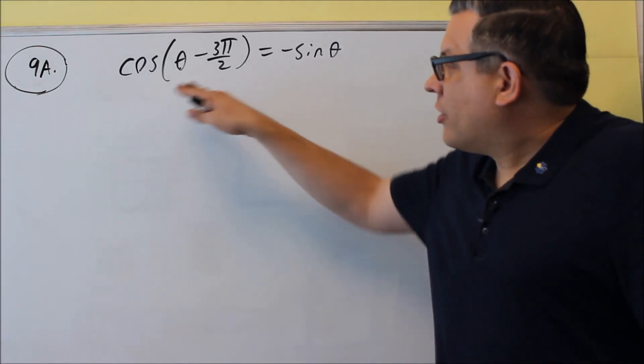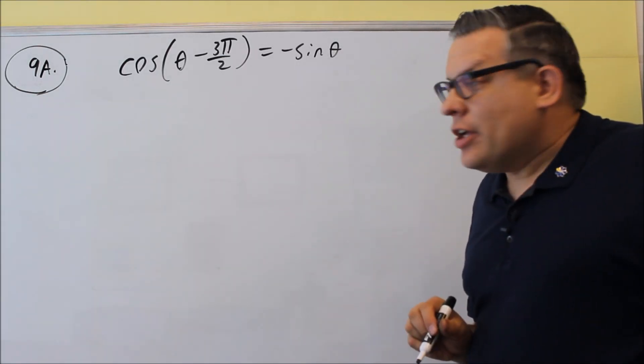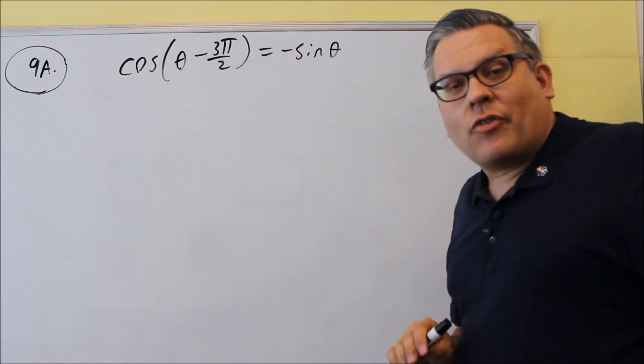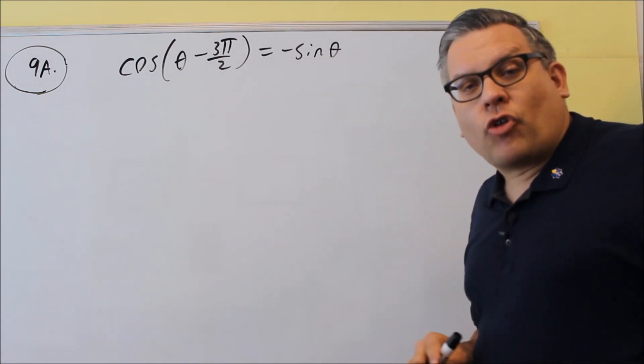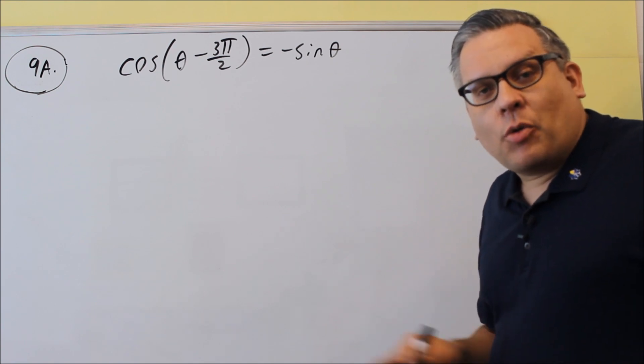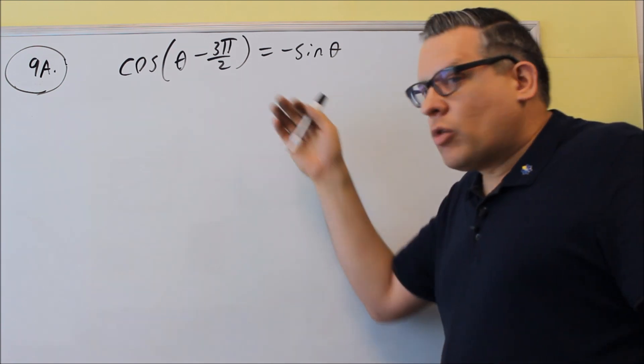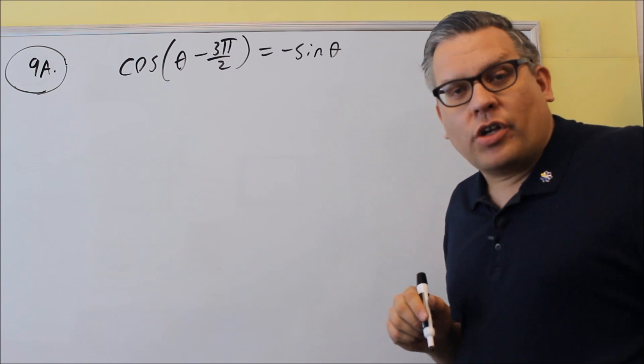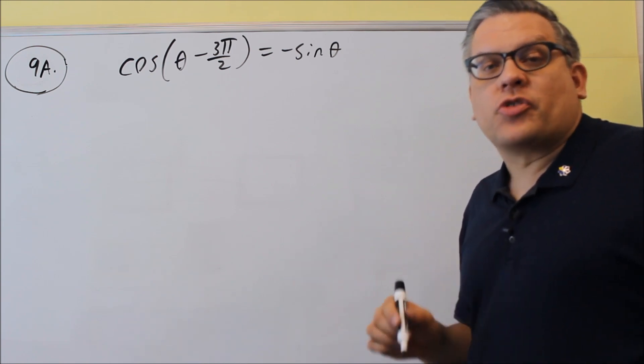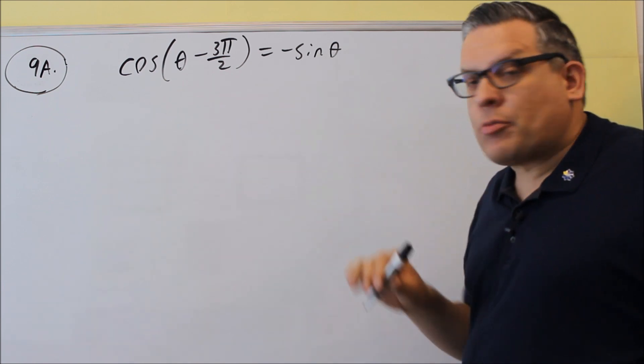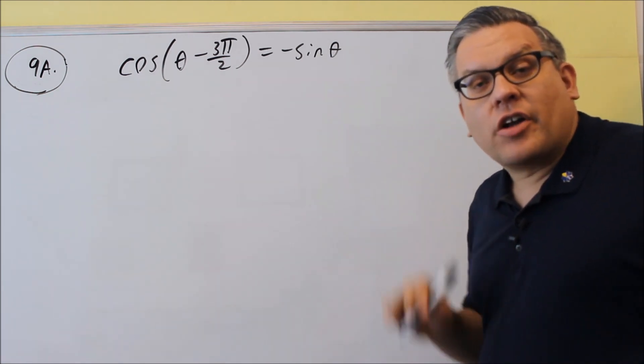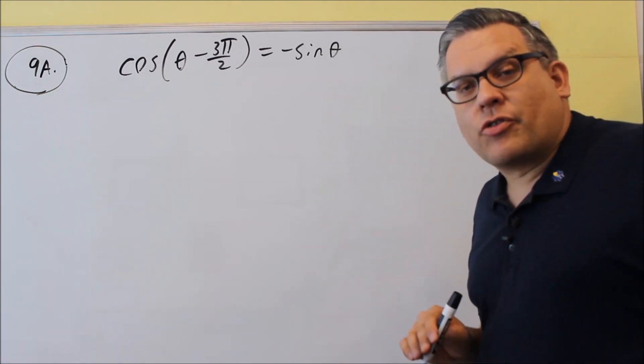Okay, for number 9, it's another one where we have to verify the identity, but this is going to be involving the sum or difference formulas. So you want to have the sum or difference formulas written on your note card, but we're only going to be using the ones for sine and cosine only. There were some sum or difference formulas for tangent, you don't have to have those. The problem that you'll have here in number 9 is only going to involve sine and cosine with the sum or difference formulas.